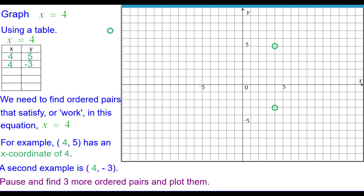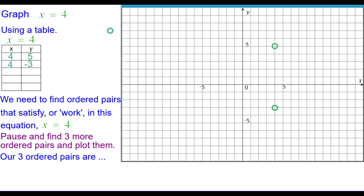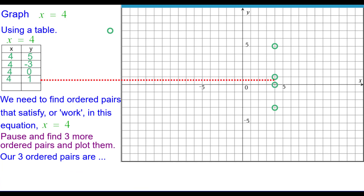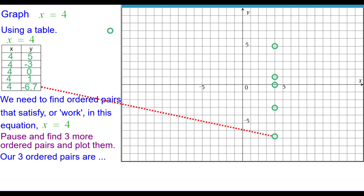Go ahead and pause and find three more ordered pairs and plot those points. Press resume when you're ready. So our three ordered pairs are 4 comma 0, 4 comma 1, and 4 comma negative 6.7 — just to show you that you do not have to always use integers.